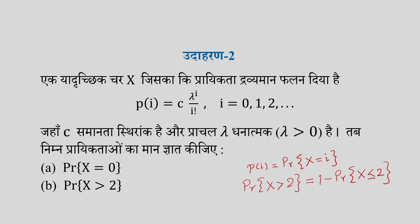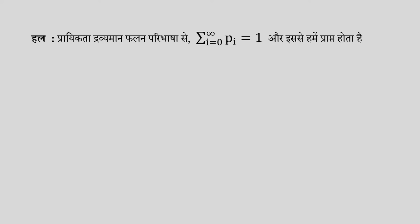First of all, in this question, we have a situation in which we need to work this out. Because we have a property in which the sum of all probabilities equals one. If we can use this property, if we can use the summation to calculate the sum, then we will be able to determine the constant.